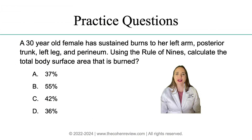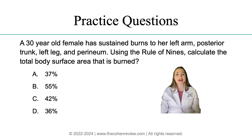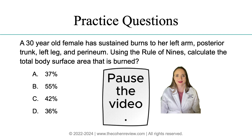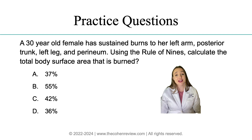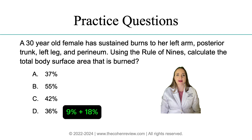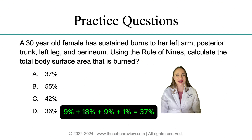Question number one: a 30-year-old female has sustained burns to her left arm, posterior trunk, left leg, and perineum. Using the rule of nines, calculate the total body surface area that is burnt. A: 37%, B: 55%, C: 42%, or D: 36%. The correct answer is A, 37%. The left arm is 9%, posterior trunk 18%, left leg 9%, and the perineum is 1%.